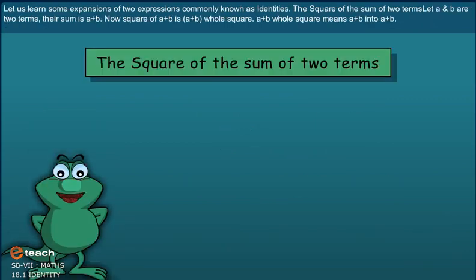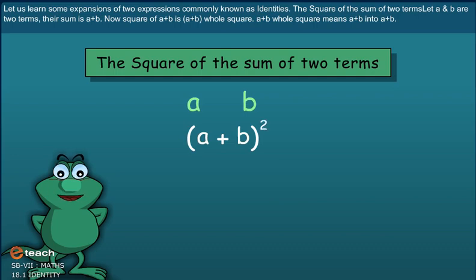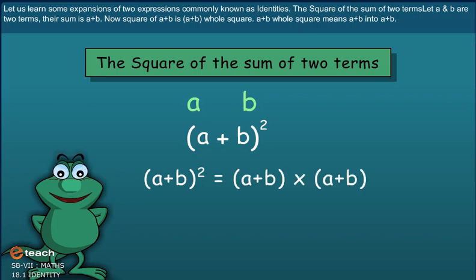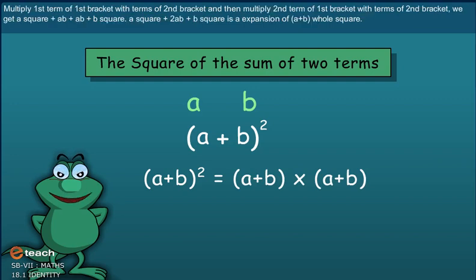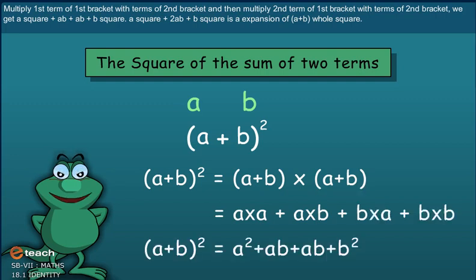Now students, let us learn some expansions of two expressions commonly known as identities. The square of the sum of two terms: let A and B be the two terms. Their sum is A plus B. The square of A plus B is A plus B whole square, which means A plus B into A plus B. Multiplying out, we get A square plus AB plus AB plus B square, which gives A square plus 2AB plus B square as the expansion of A plus B whole square.